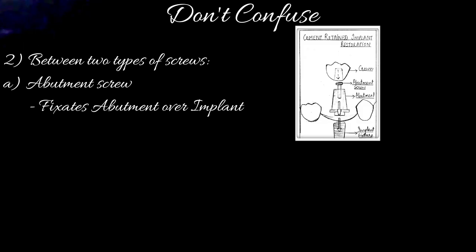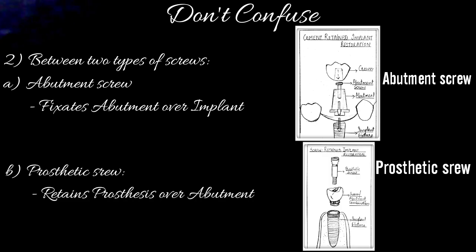The second point is: do not confuse between the abutment screw and the prosthetic screw. The abutment screw is the one which fixates the abutment, or we can say the two-piece abutment, over an implant. The prosthetic screw or coping screw is the one which retains the prosthesis over the abutment, as you can see in the pictures. If there is any confusion, I would suggest watching my previous two videos on implant components; links are provided in the description box below.